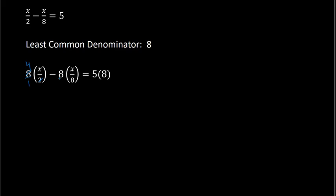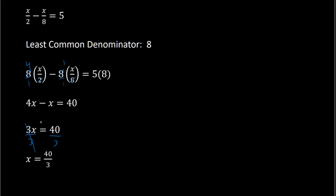For the second term, 8 over 1 can divide with the other 8 in the denominator, and that gives me 1. So I have 4x minus 1x equals 5 times 8, which is 40. Then 4x minus 1x is 3x, and then I can divide both sides by 3, and that gives me x equals 40 over 3. And that's my solution.